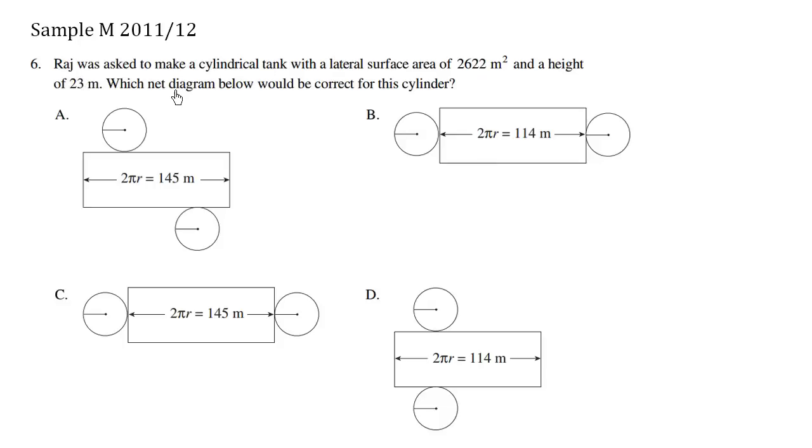Raj was asked to make a cylindrical tank with a lateral surface area of 2,622 meters squared and a height of 23 meters. Which net diagram below would be correct for this cylinder?